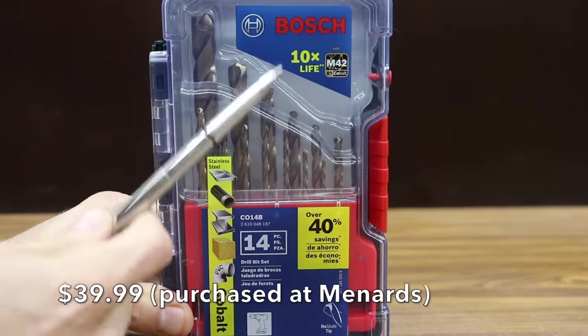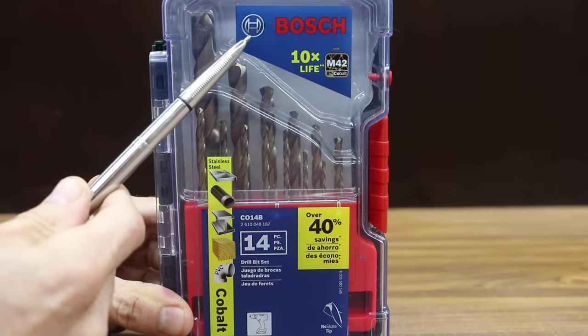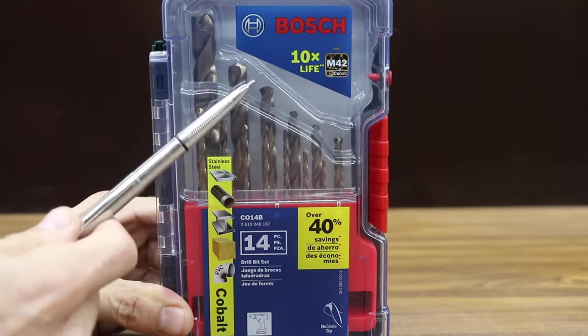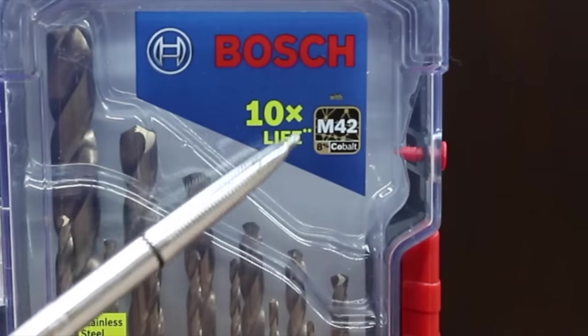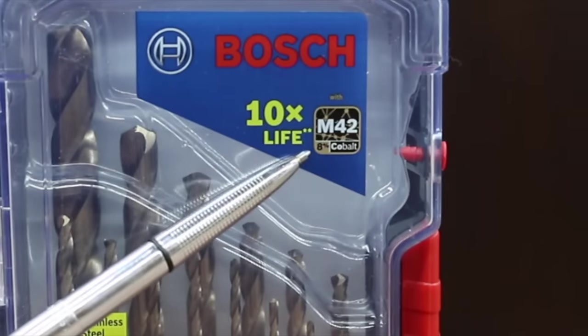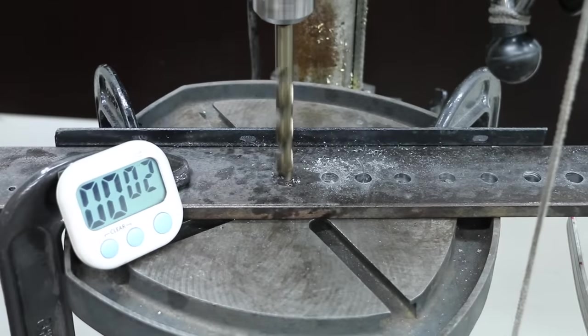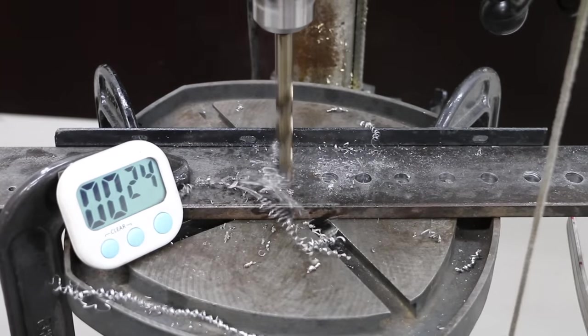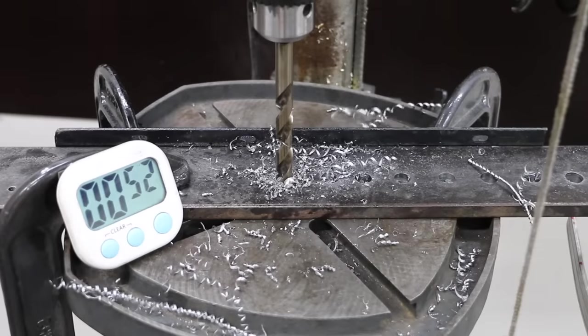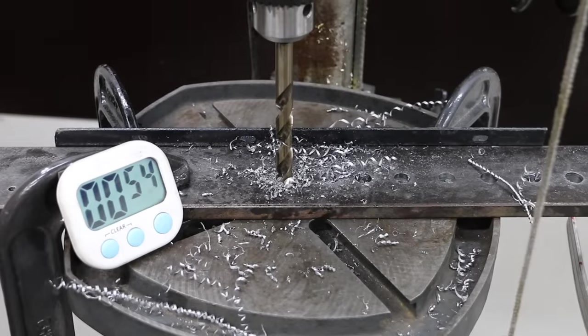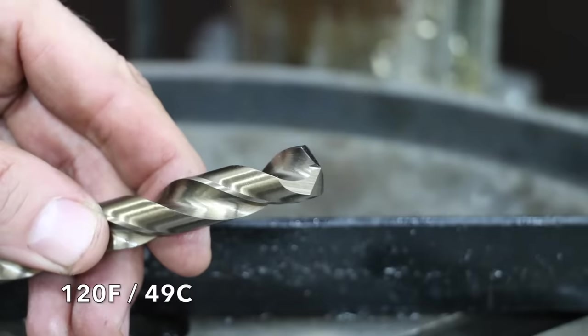The most expensive brand we'll be testing is this Bosch brand costing $39.99 for only 14 pieces. This claims to have a 10 times longer lifespan M42 8% Cobalt. Right at 51 seconds with the Bosch. 120 degrees. The Bosch looks as good as new.